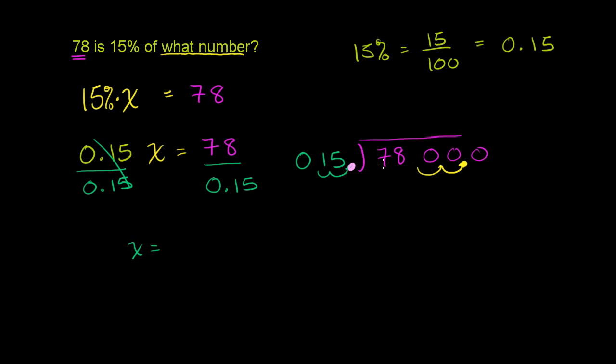15 does not go into 7. So you could do 0 times and you could do all of that. Or you could just say, OK, that's not going to give us anything. So then how many times does 15 go into 78? So let's think about it. 15 goes into 64 times. 15 times 5 is 75. That looks about right. So we say 5 times. 5 times 15. 5 times 5 is 25. Put the 2 up there. 5 times 1 is 5 plus 2 is 7. 75, you subtract. 78 minus 75 is 3.